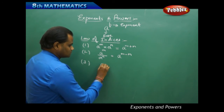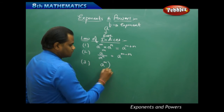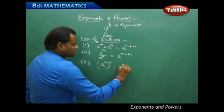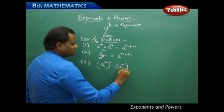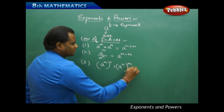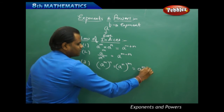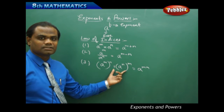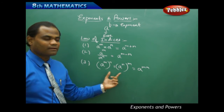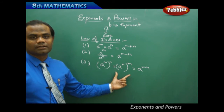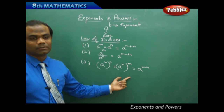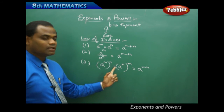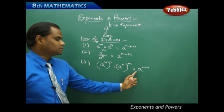The third law of indices states that a power m, whole power n, is equal to a power n, whole power m, which equals a power mn. The order of writing the powers does not affect the value in the simplified form — a power m whole power n equals a power mn.